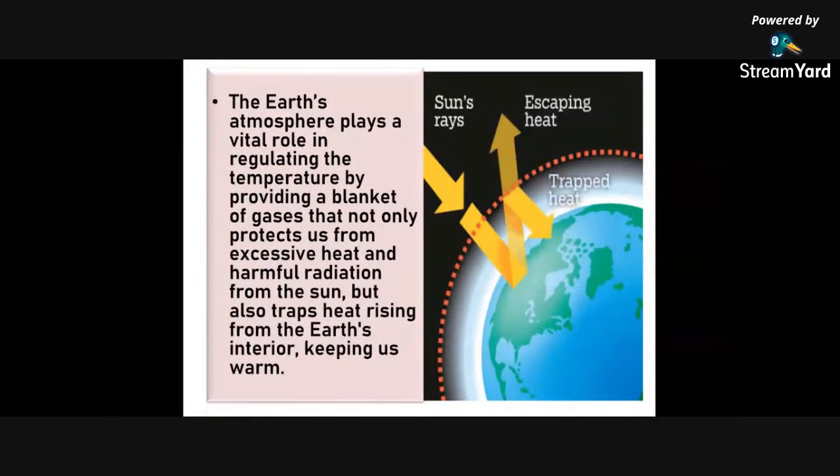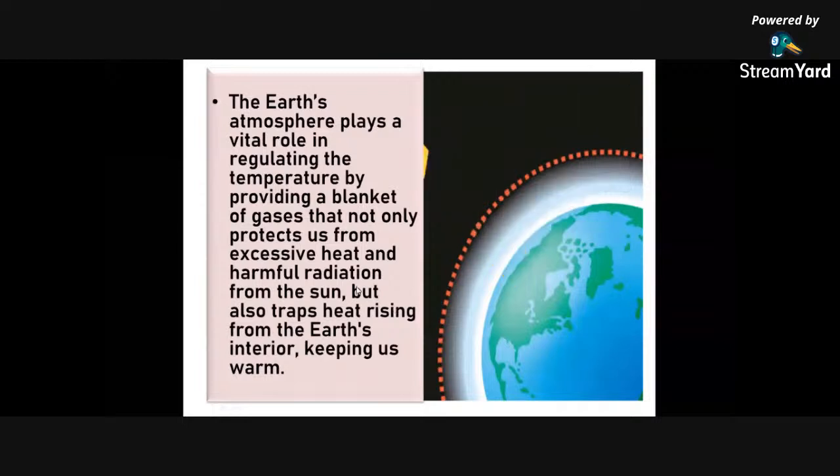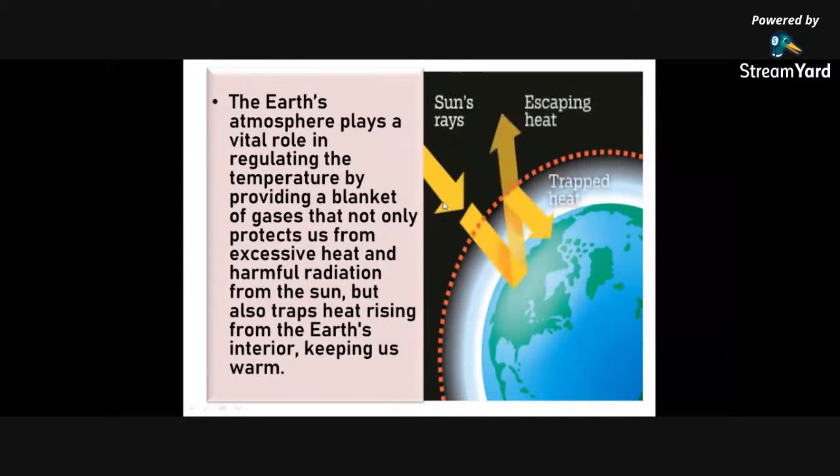Earth's atmosphere is composed of about 78% nitrogen, 21% oxygen, and 1% other gases. The Earth's atmosphere plays a vital role in regulating the temperature by providing a blanket of gases that not only protect us from excessive heat and harmful radiation from the sun, but also traps heat rising from the Earth's interior, keeping us warm.